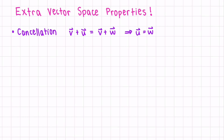There are some other vector space properties that can be used to prove a set is not a vector space, and these can be deduced from the 10 axioms. If we add v plus u equals v plus w, where v, u, and w are vectors, we want to show that this means u and w are equal — so we want to get rid of the v's.